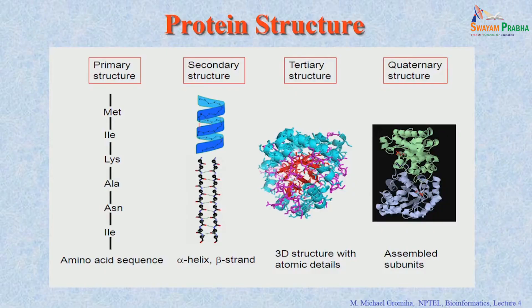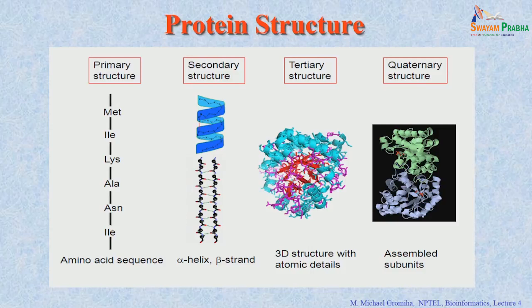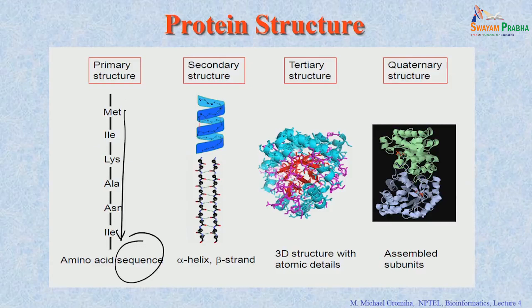To understand the function, it is essential to know about the structures, which is why much emphasis has been given to understanding protein structures. When looking into protein structures, there are various levels: primary structure, secondary structure, tertiary structure, and quaternary structure. Primary structure deals with the combination of amino acid residues — the sequence, for example, the first residue is methionine, second is histidine, third is lysine. Secondary structure shows how these residues are arranged.